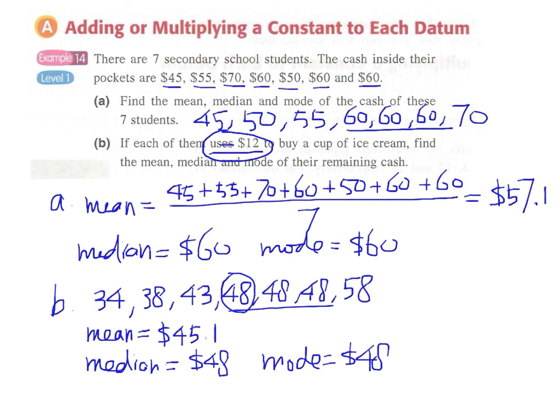And therefore, our conclusion can be like this. We don't need to know the exact amount of money inside the pockets of each student in order to know the change of the mean, median and the mode. All we have to know is the amount by which the pocket money is decreased or increased, which is this $12.